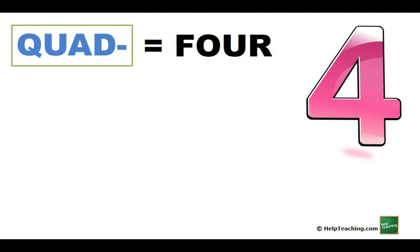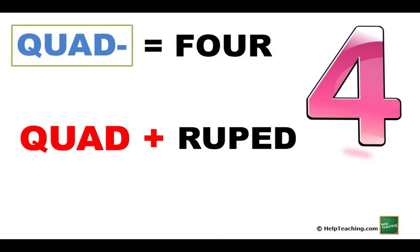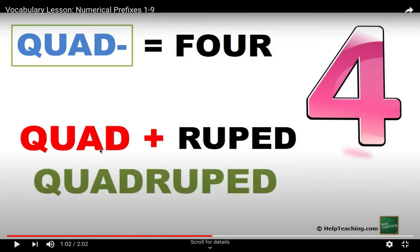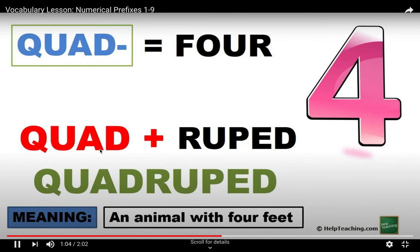Four, quad. Quad with ruped is quadruped. Can you say that word, quadruped? Can you think about what that might mean? I didn't know until I watched this video. It means an animal with four feet. So your cat is a quadruped, your dog is a quadruped. If you have a pony, it's a quadruped too.